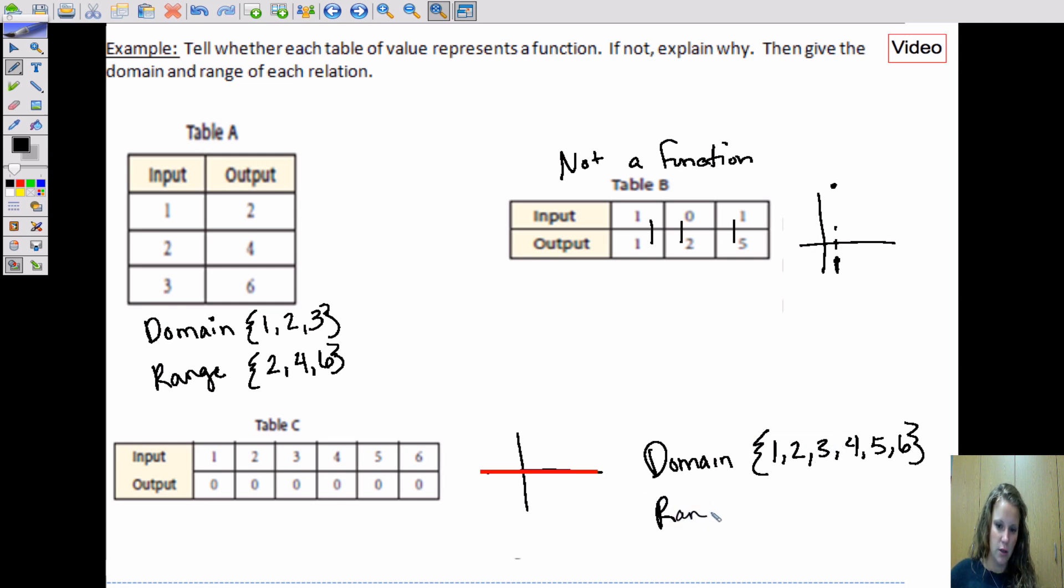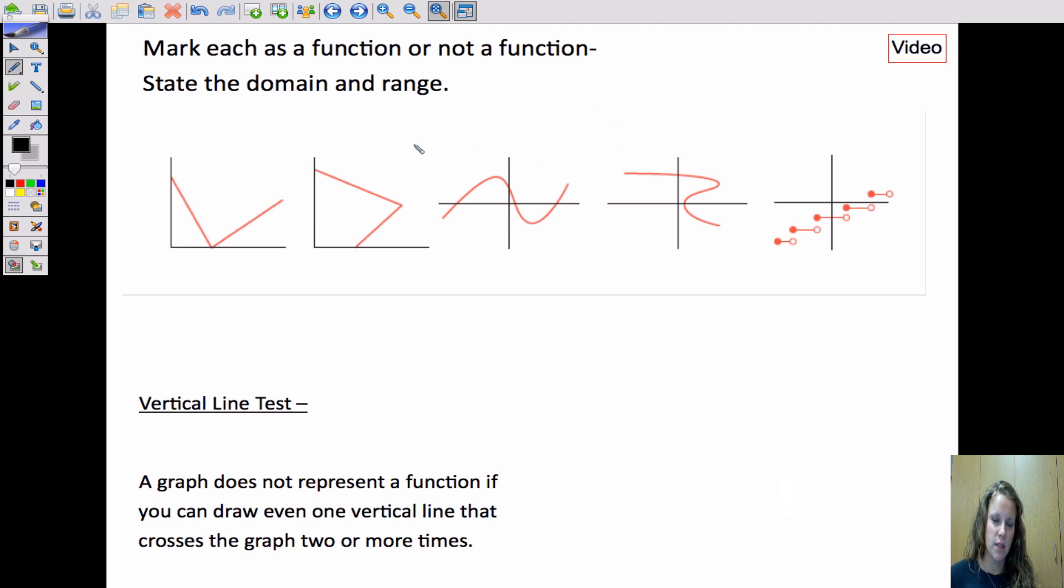And then our range is going to be a set of just one number, the number zero. So our domain is {1, 2, 3, 4, 5, 6}, and our range is {0}. Moving on, we're asked to see if each of these is a function and state the domain and range.